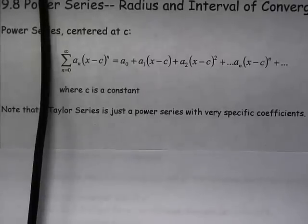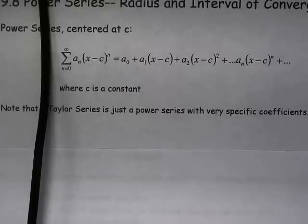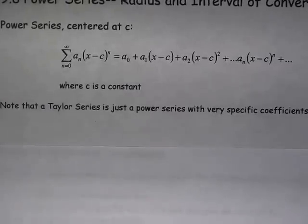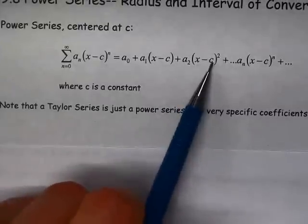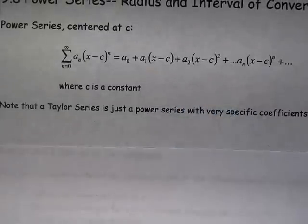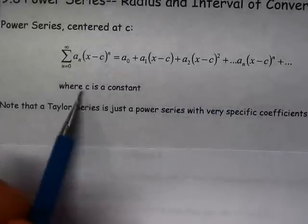So when n equals 0, it's going to be x minus c to the 0. When n equals 1, it's going to be x minus c to the first, x minus c squared, and so on until we get x minus c to the n. c is some constant.